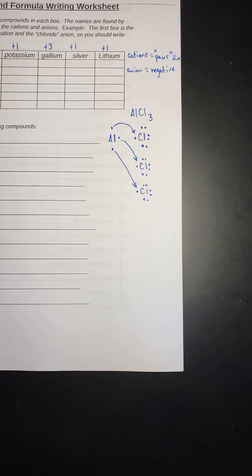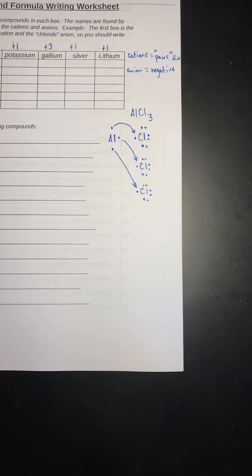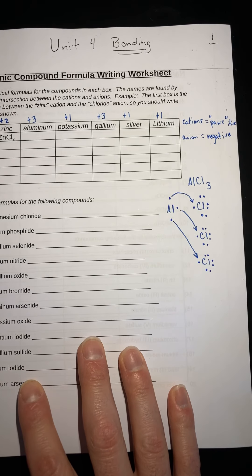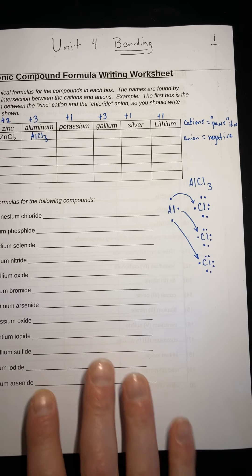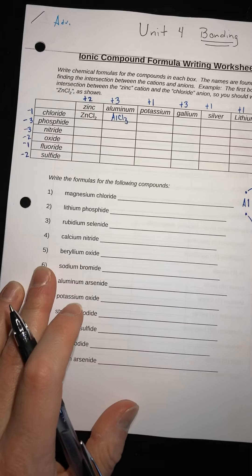So your formula is AlCl3, because I have three chlorines. When you write a formula, you don't write ones — so if there's one of something, you just don't put a number. So in your slot right here it would be AlCl3.